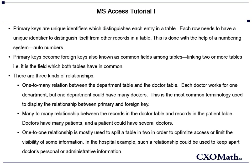This brings us to the topic of relationships. There are three kinds of relationships: one-to-many, many-to-many, and one-to-one. This is said to be the cardinality of a given table in relation to another. One-to-many is the most common type of relationship — for example, the relationship between the department table and the doctor table. Each doctor works for one department, but one department could have many doctors. This is the most common terminology used to display the relationship between primary and foreign key.